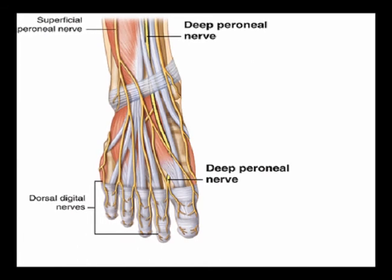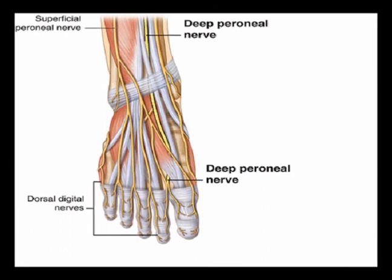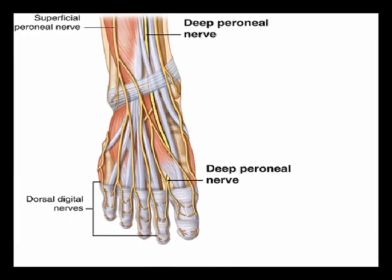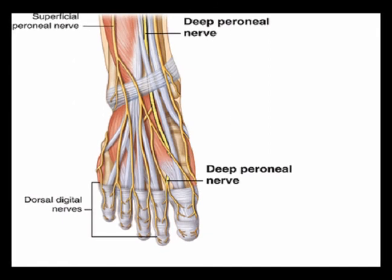The lateral branch courses deep to the extensor digitorum brevis and extensor hallucis muscles and provides their motor innervation and some sensory innervation to the ankle.